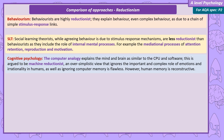Cognitive psychologists' computer analogy explains the mind and brain as similar to a CPU and software. This is argued to be machine reductionist — an over-simplistic view that ignores the important and complex role of emotions and irrationality in humans, and also ignores key differences, such as the fact that computer memory is flawless whereas human memory is reconstructive and often contains errors.